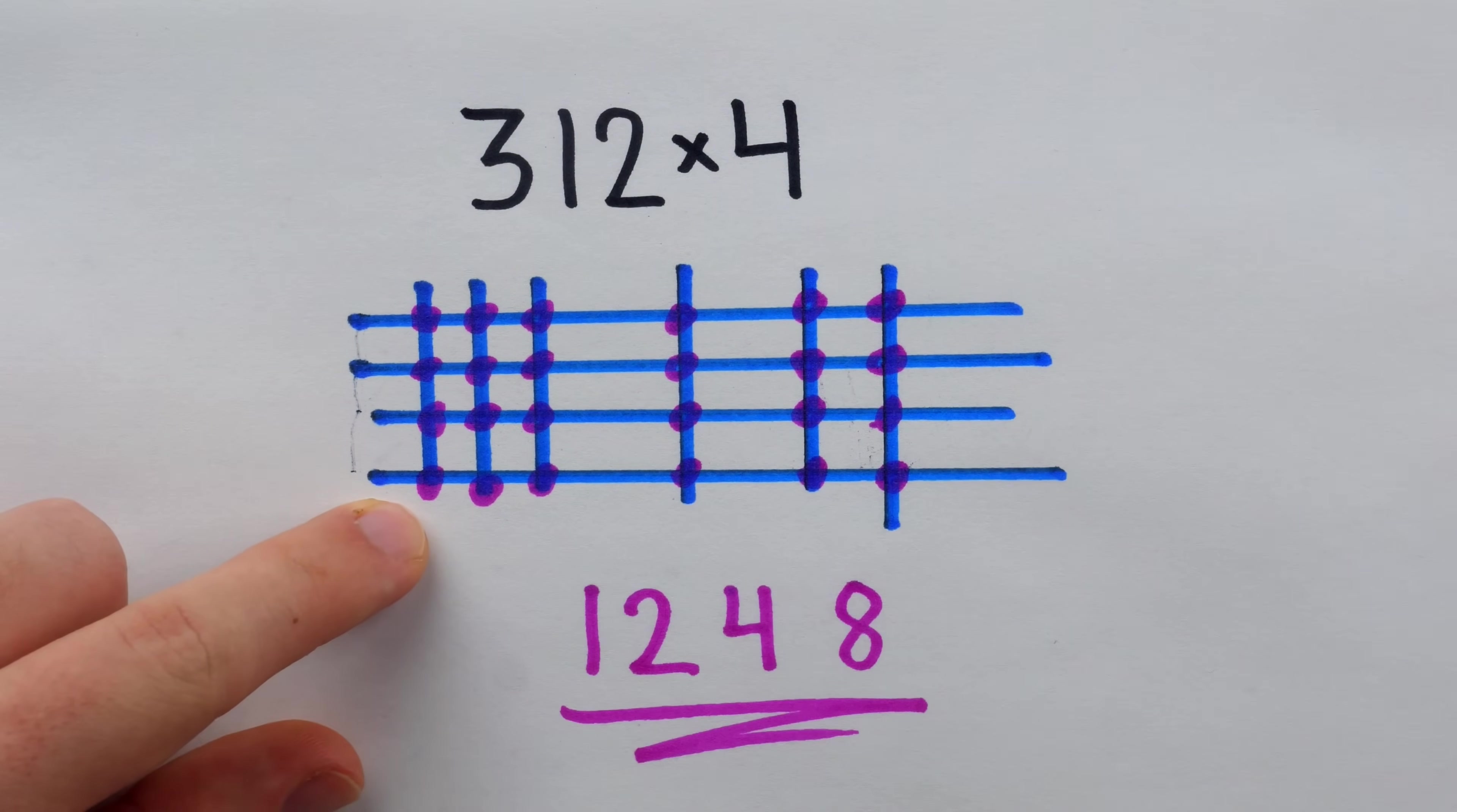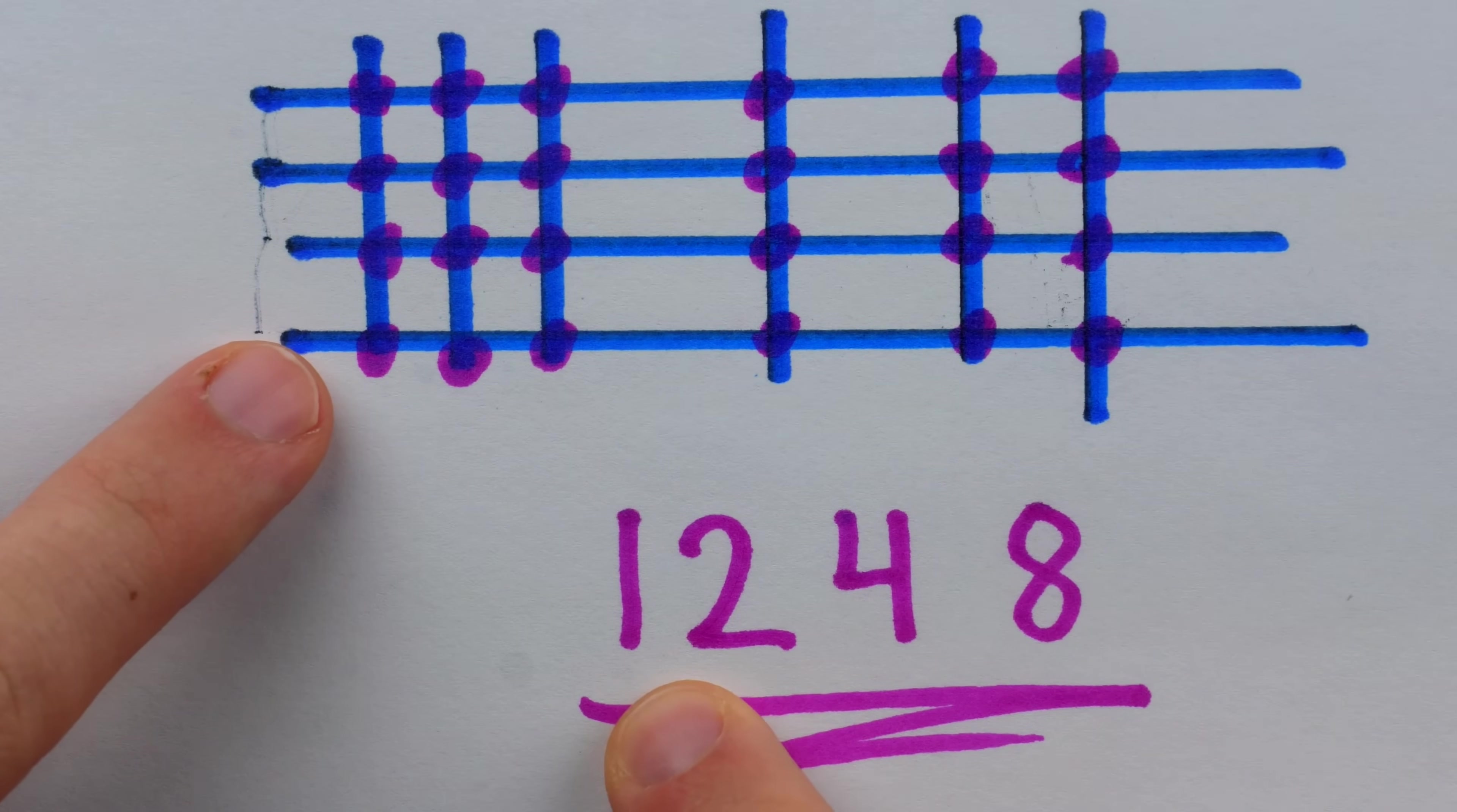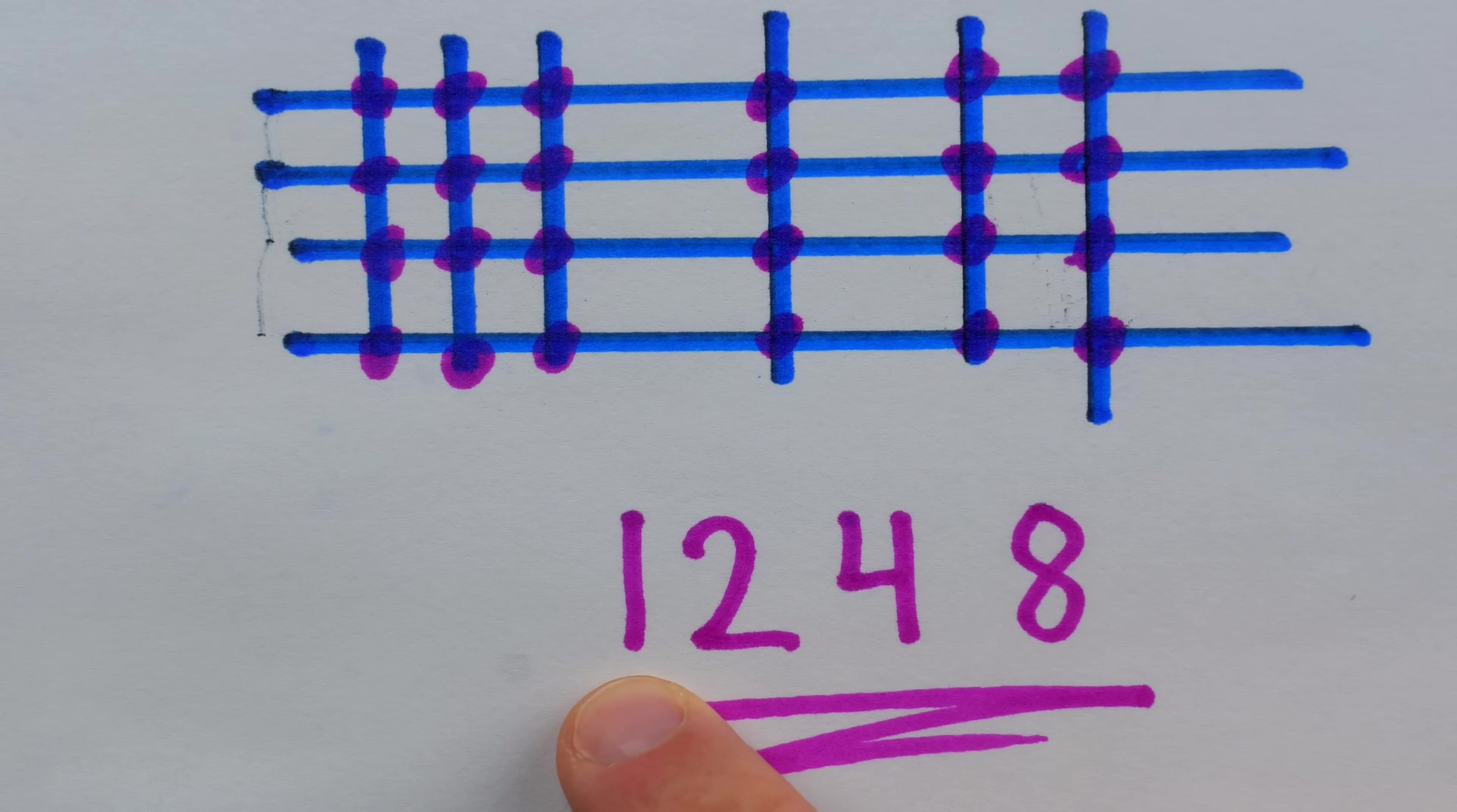When we got to this last set of intersections, we had a two-digit number, 12, which didn't cause any problems because this was at the very end of the number, so having to carry that 1 over wasn't an issue.